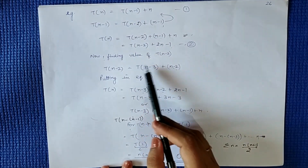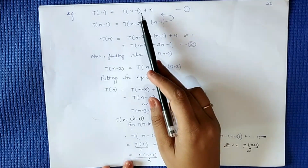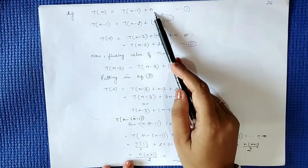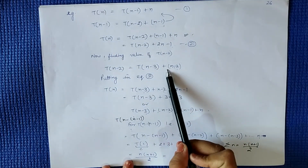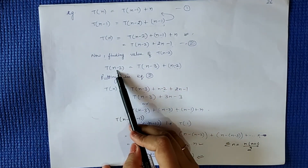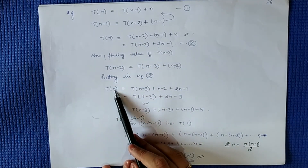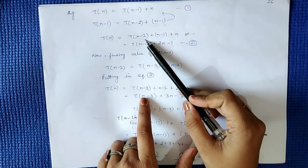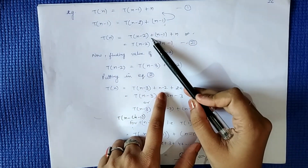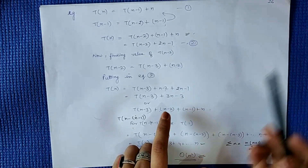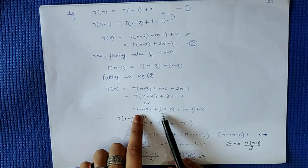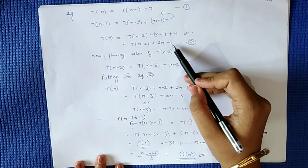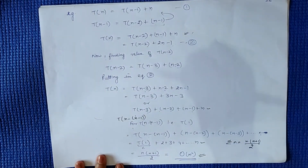Now we find the value of T(n-2). Substituting into the equation: T(n-2) = T(n-3) + (n-2). Putting this value into our current equation, T(n) = T(n-3) + (n-2) + (n-1) + n, which gives T(n-3) + (n-2) + (n-1) + n. Putting into the other equation gives the same result.